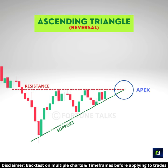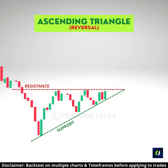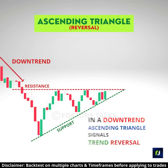The ascending trend line and the resistance line meet at a point called the apex. The pattern is valid only if the price tests the resistance level at least twice and the support level at least three times.